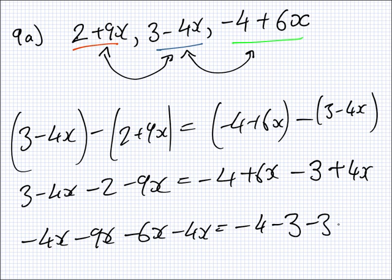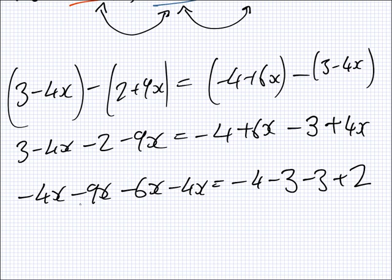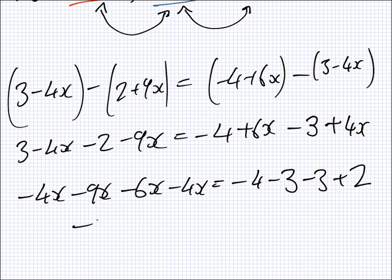So, now I just solve. So, this is 3 minus 4x minus 2 minus 9x equals minus 4 plus 6x minus 3 minus 4x. Oh, careful. Plus 4x. Double minuses. So, how about we take all the x's to the left and all the numbers to the right? So, on the left I have minus 4x minus 9x minus 6x minus 4x. And on the right I have minus 4 minus 3, minus 2. If I just rearrange as necessary. Right. So, what's that? Minus 23x. Is that right? Minus 23. This is an 8, is it? Minus 8. Very good.